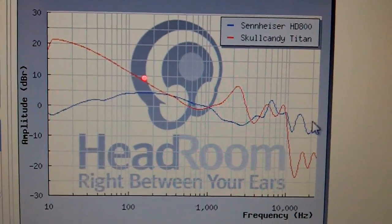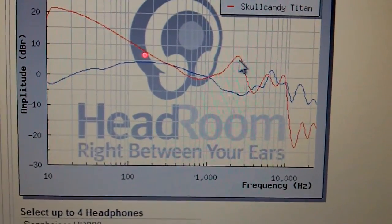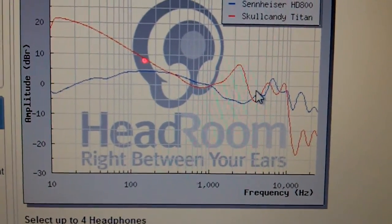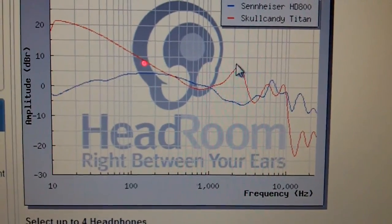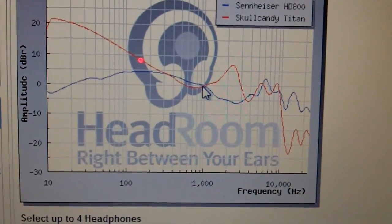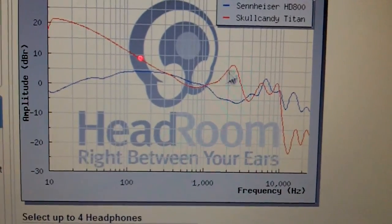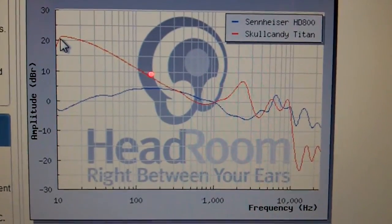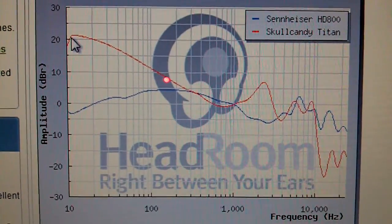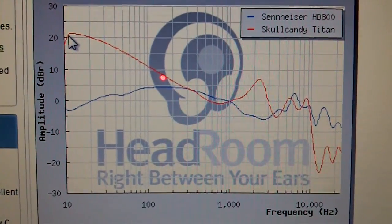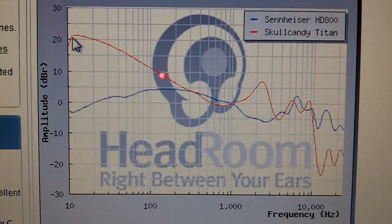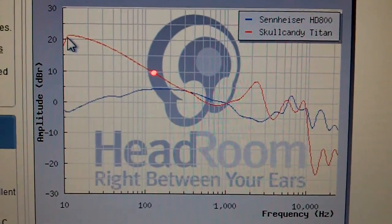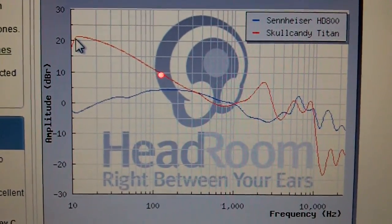This is the upper treble. In the area of sibilance, which is the upper mid-range, it has a huge peak. A peak is where it just suddenly increases in volume. And the bass is just ridiculously over-emphasized. So, that is basically a Skullcandy Titan, and pretty much why it sounds so bad. And all the other Skullcandy earphones and headphones have similar frequency responses to this.